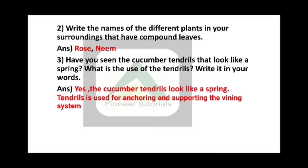Question No. 3: Have you seen the cucumber tendrils that look like a spring? What is the use of the tendrils? Write it in your own words. Tendrils means a very small thread-like structure. It gives support, like a spring. Tendrils are used for anchoring and supporting the vining system.